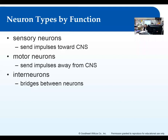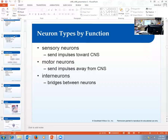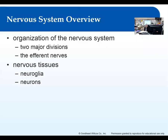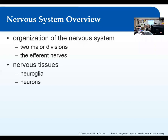So, nervous system — when you think of the nervous system, you think of the brain, spinal cord, and nerves. Those are the central organs of the nervous system. There are two major divisions: we have the central nervous system, which is your brain and spinal cord — it's central to your body — and then the peripheral nervous system, which is basically everything else, everything outside of the brain and spinal cord.